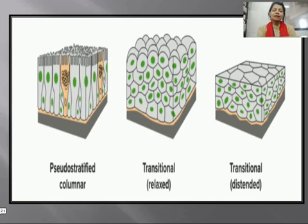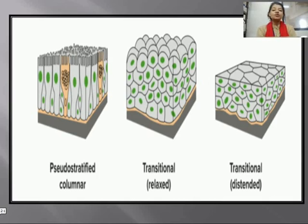The term 'pseudo-stratified' is derived from the appearance of this epithelium — the cell nuclei appear at different heights, conveying the impression that there is more than one layer. 'Pseudo' means not true, so it only appears to have multiple layers.